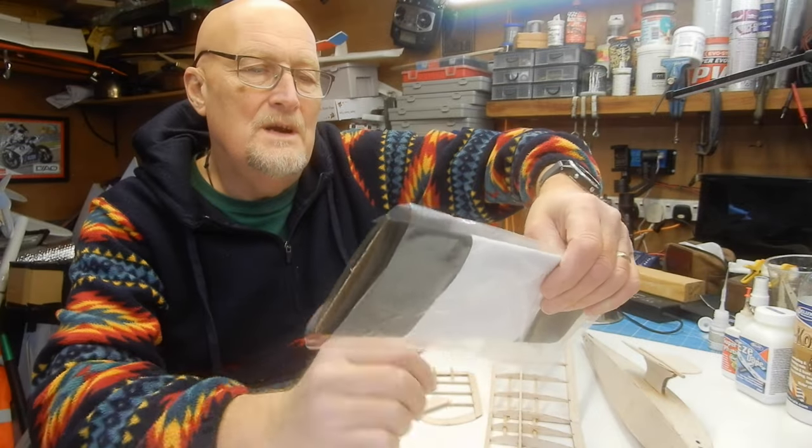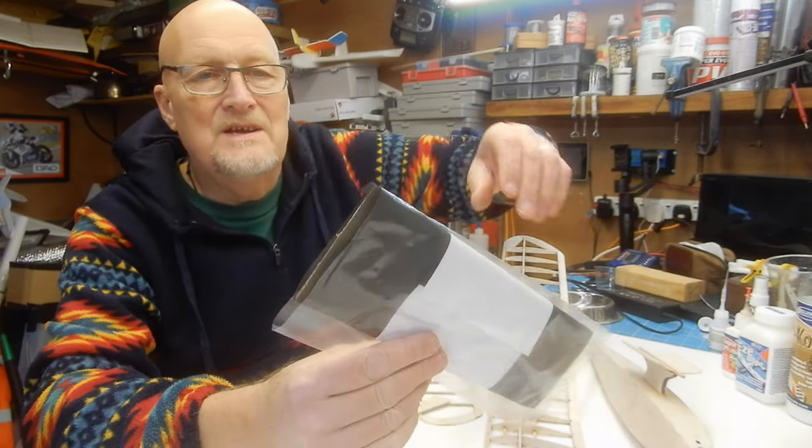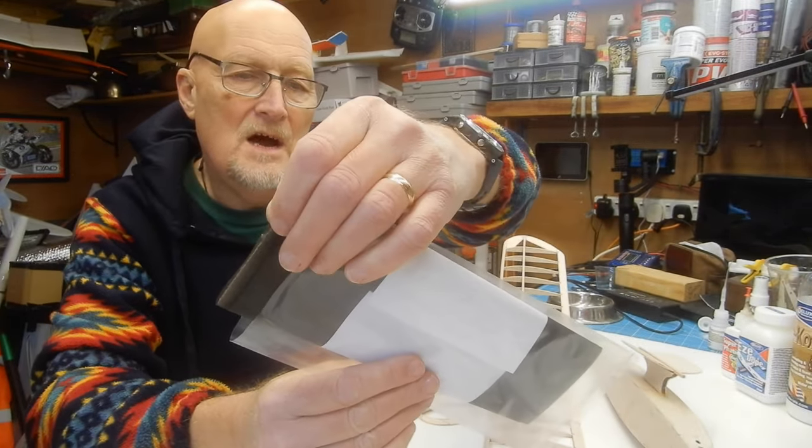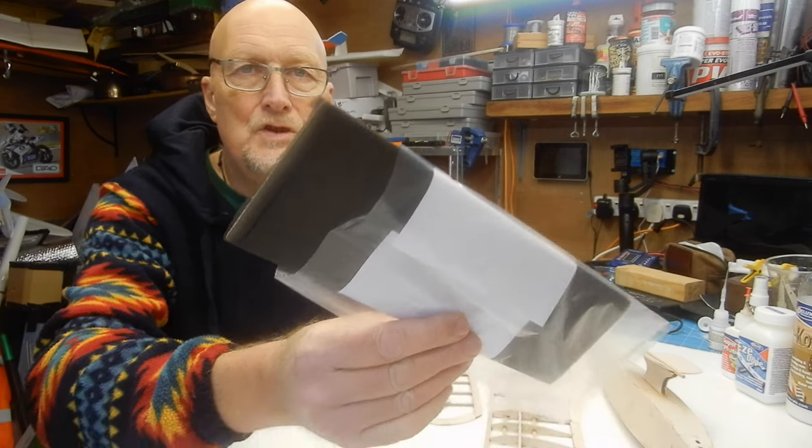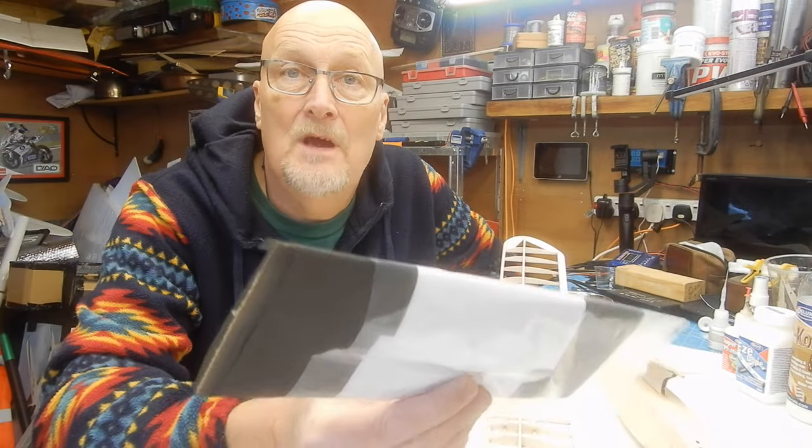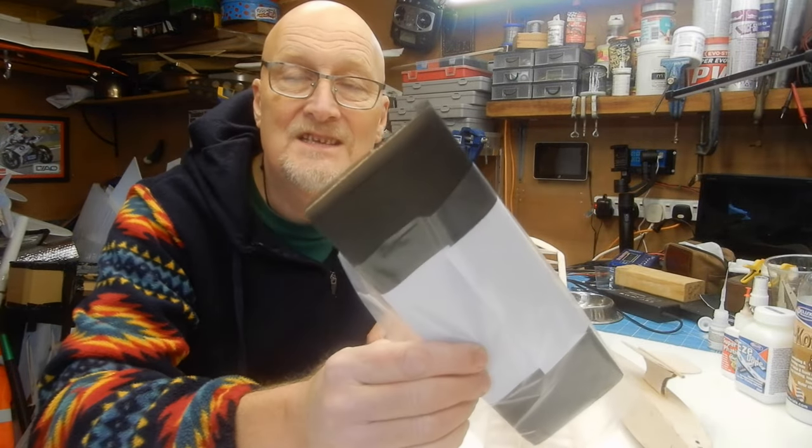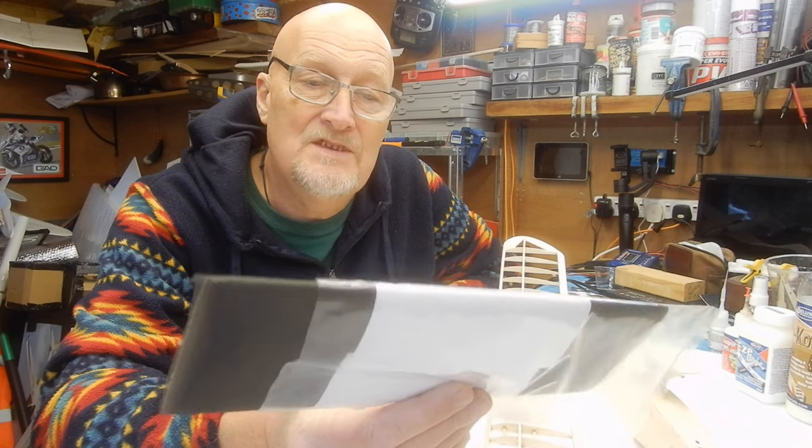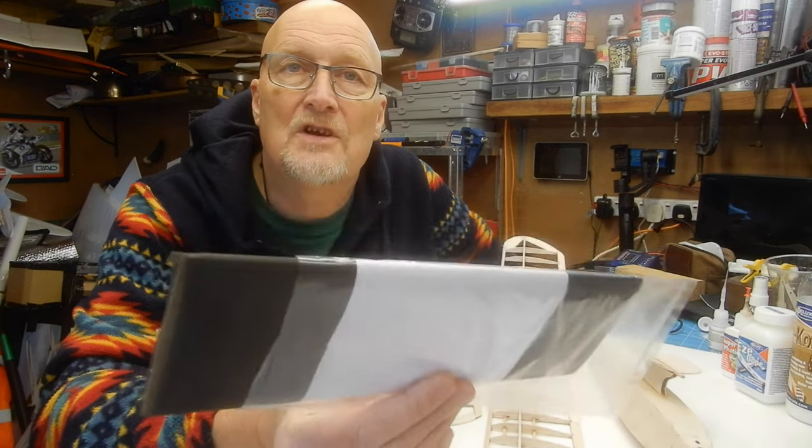It's called Angel Wings Carbon Feather, basically 9 grams per square meter carbon tissue. I've decided to use it for the fuselage because, as it says, this is not for open structure covering.